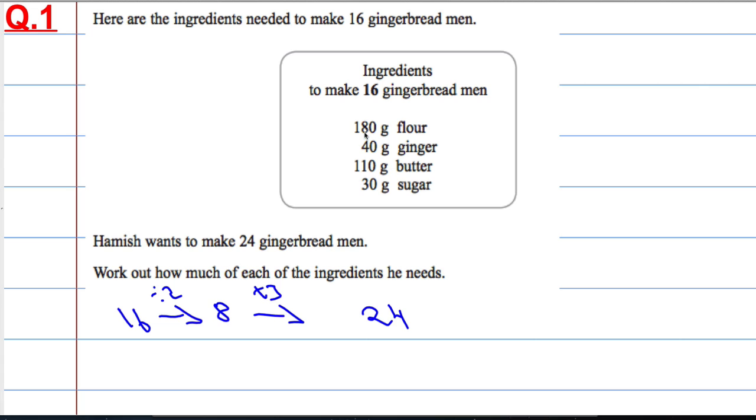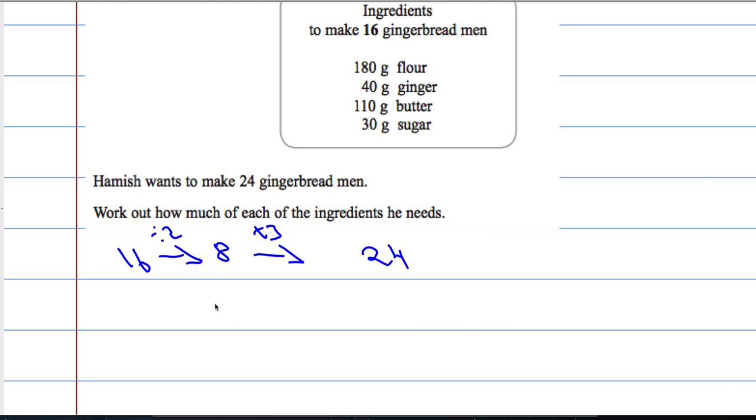Flour: dividing it by 2, we get 90 grams of flour, and then times it by 3, and we get 270 grams of flour.